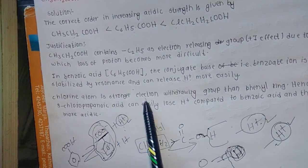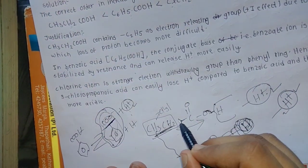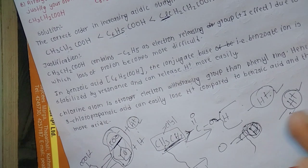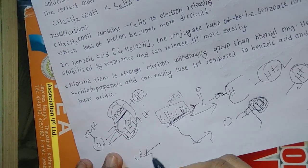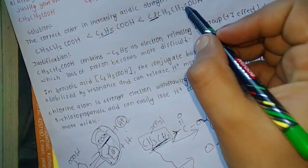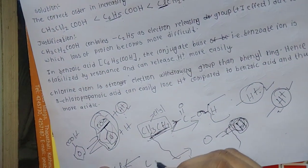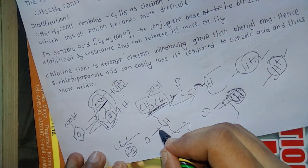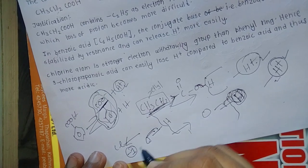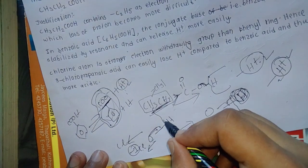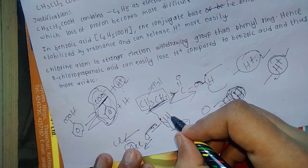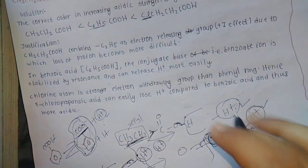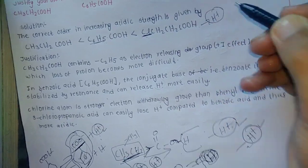The chlorine atom is a strong electron-withdrawing group with a negative inductive effect (−I effect). The alkyl group in contrast is electron-releasing. With chlorine present, the electron density on the carboxyl group is reduced, making it easier to release H+. Therefore, 3-chloropropanoic acid is the most acidic.